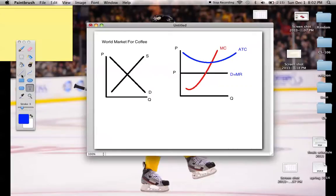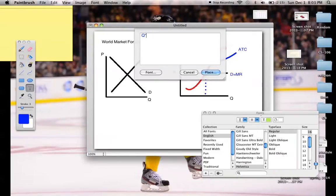And now we have to find Q star, which is right here, so we'll draw a dotted line down to the bottom. There we go. And label that Q star.